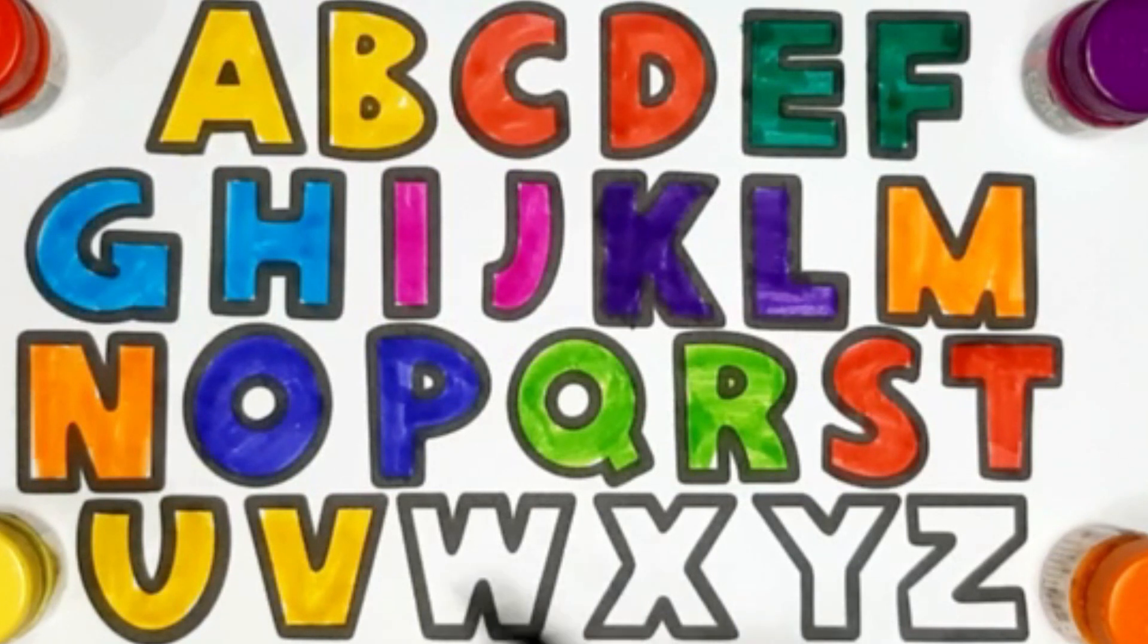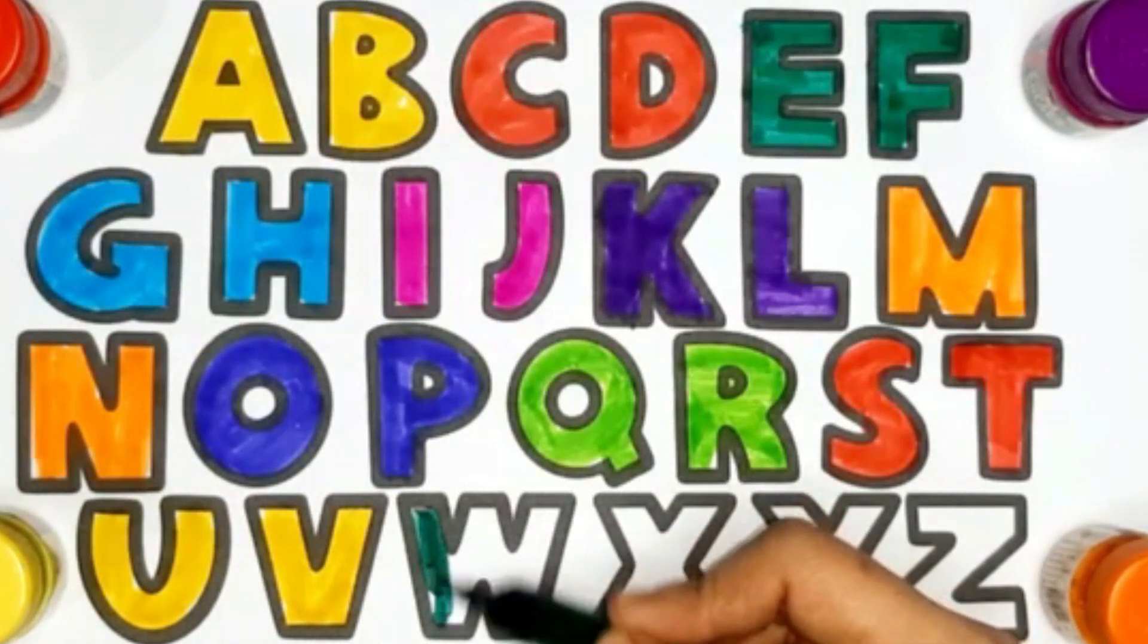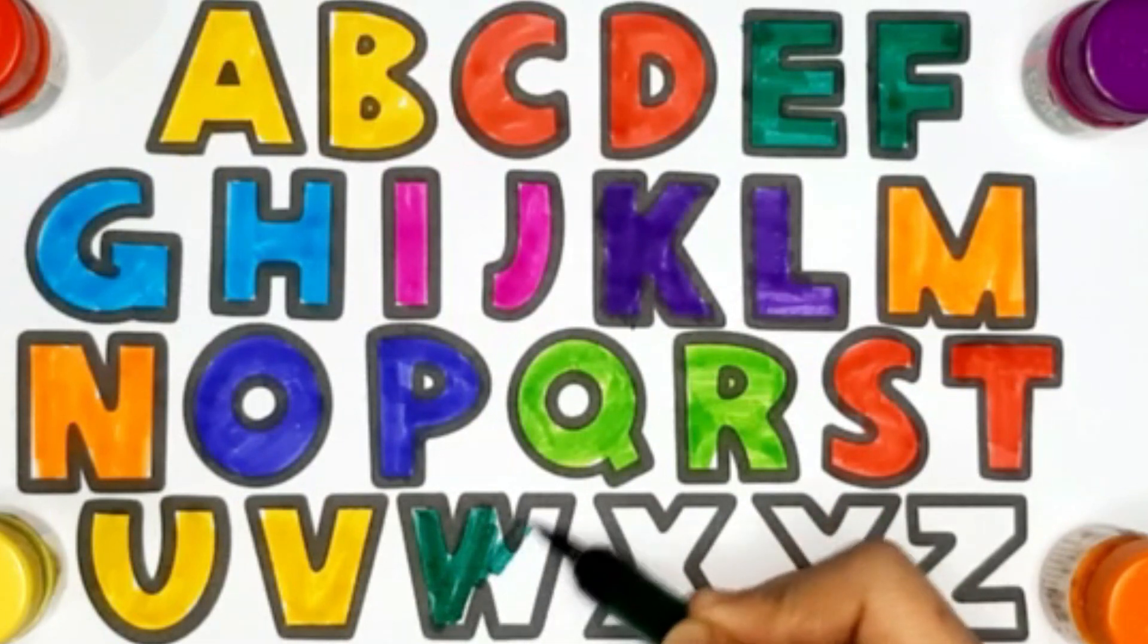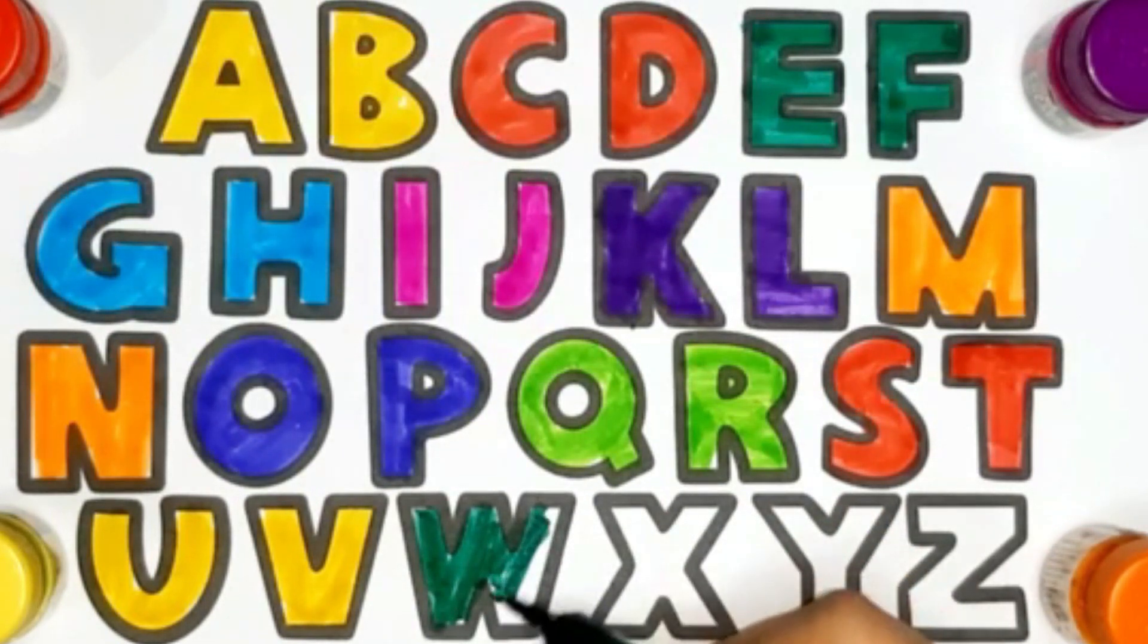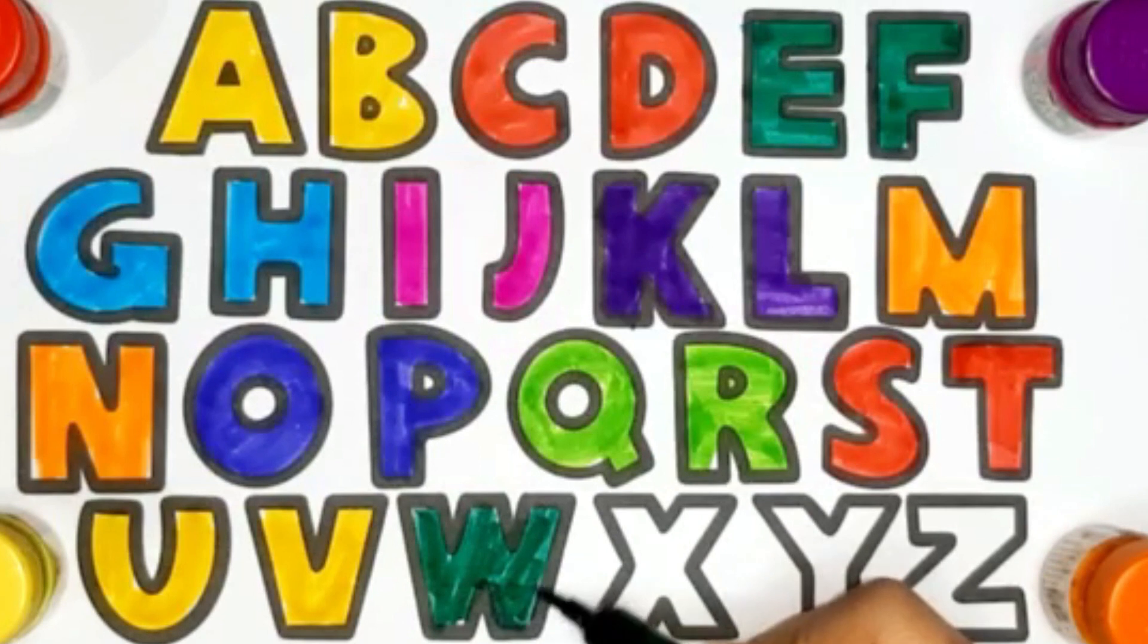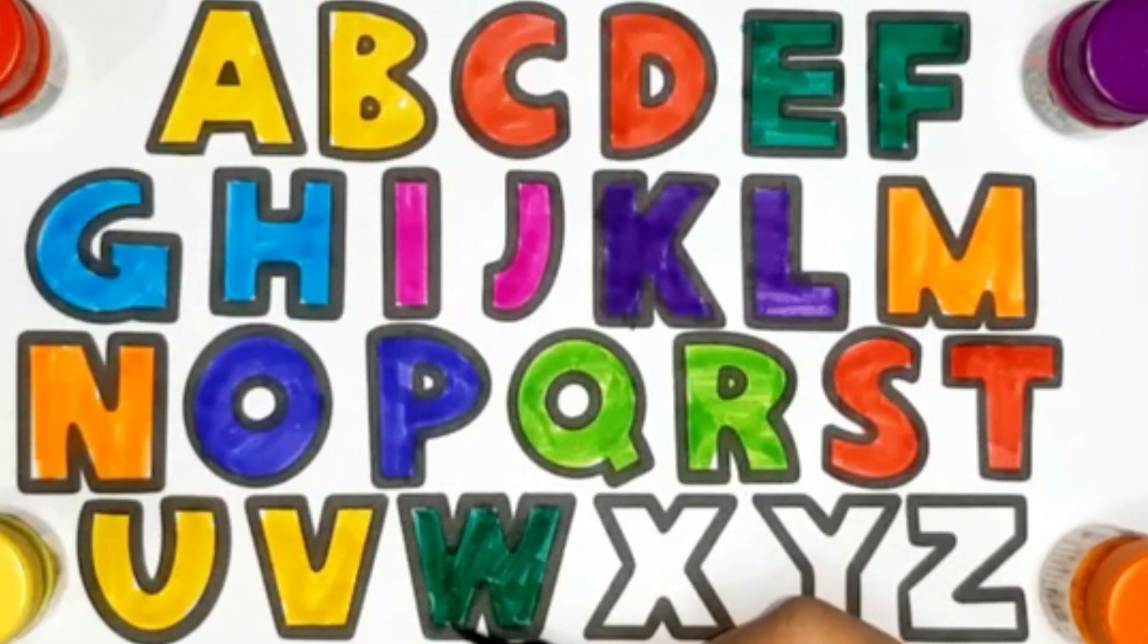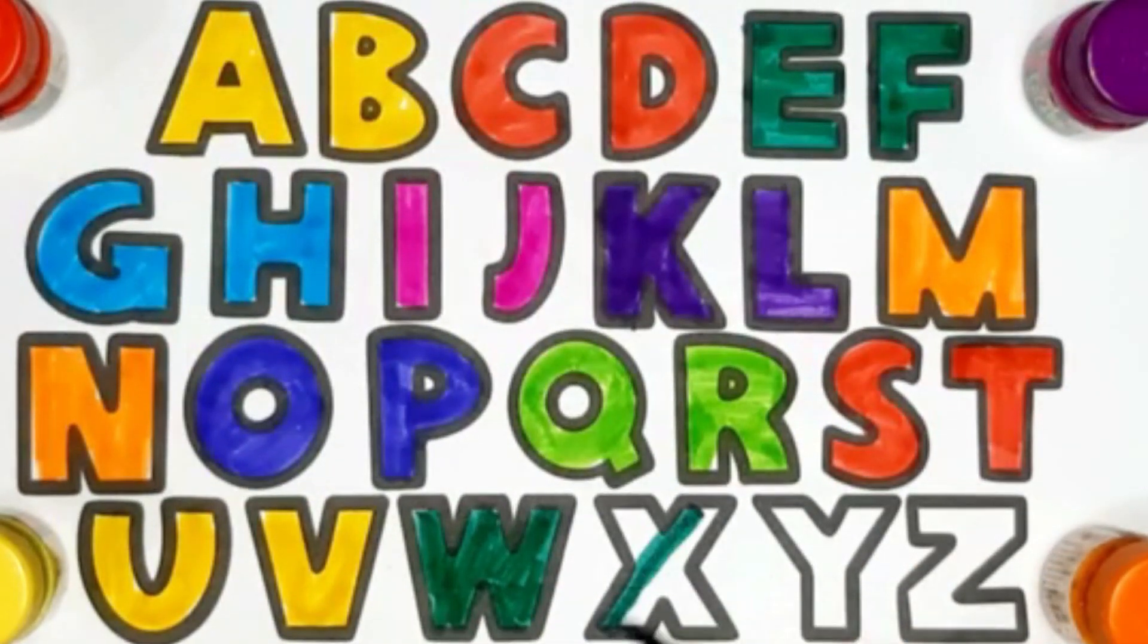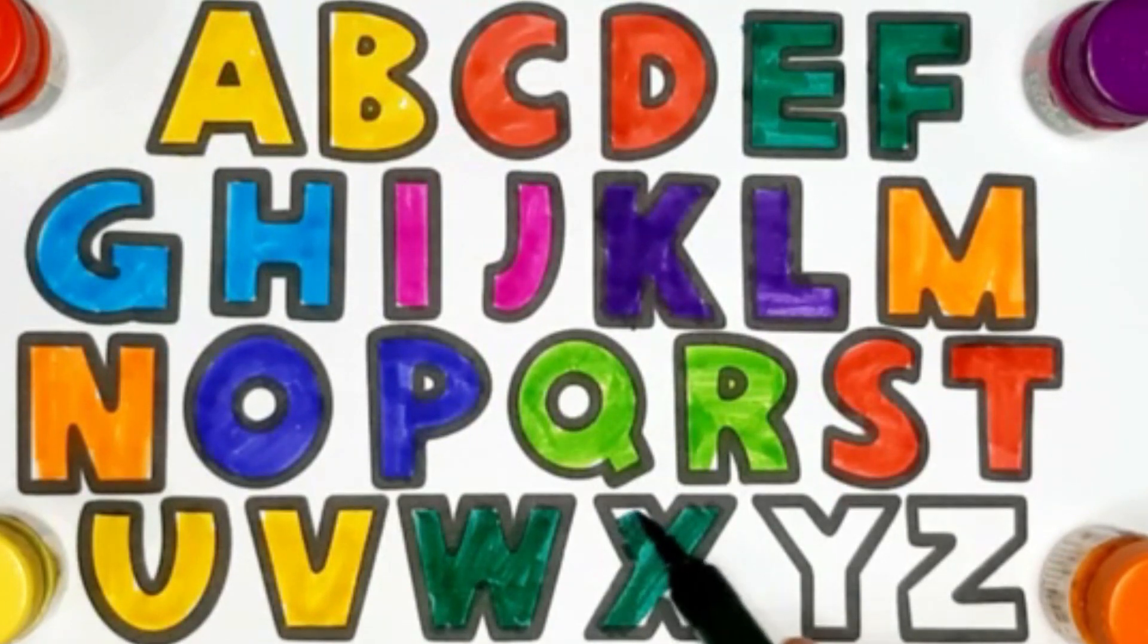Dark green color. Letter W. W for watch. Letter X. X for xylophone.